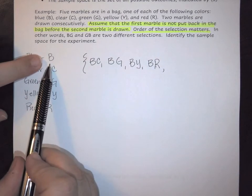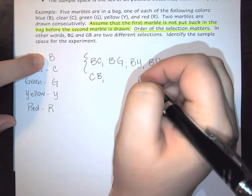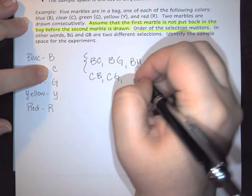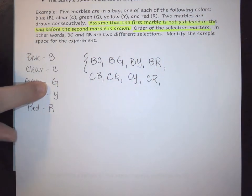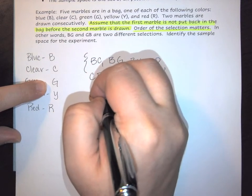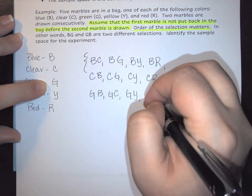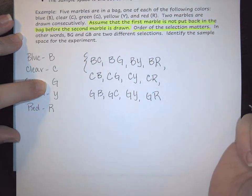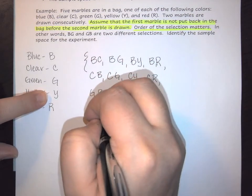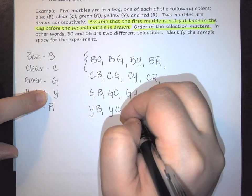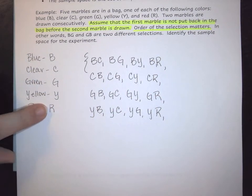Moving on: if I start with clear, I could then draw blue, green, yellow, or red. If I start with green, I could draw blue, clear, yellow, or red. If I start with yellow, I could draw blue, clear, green, or red.